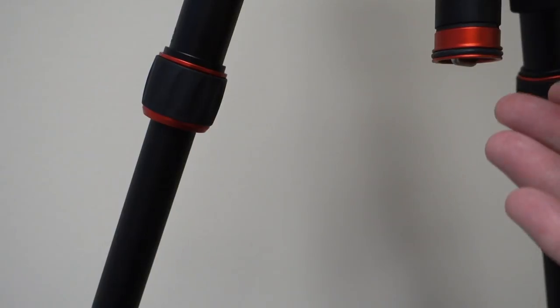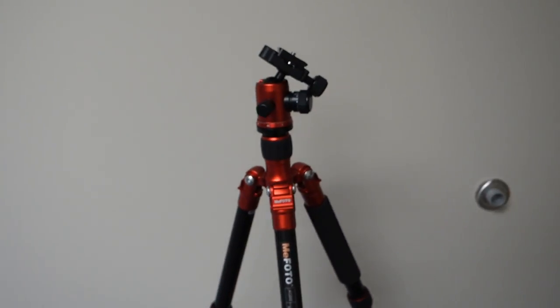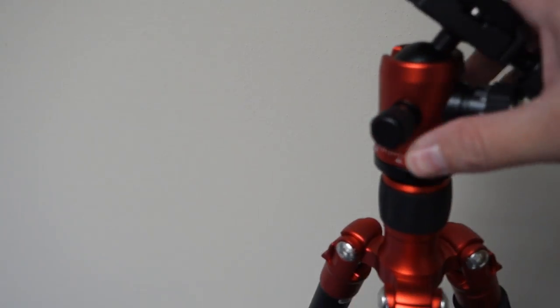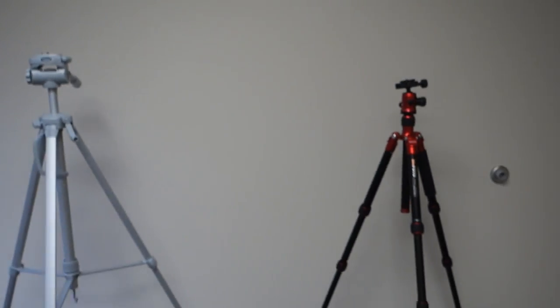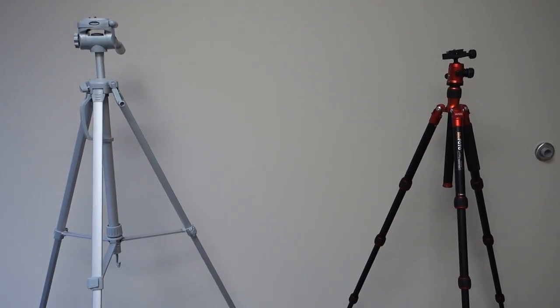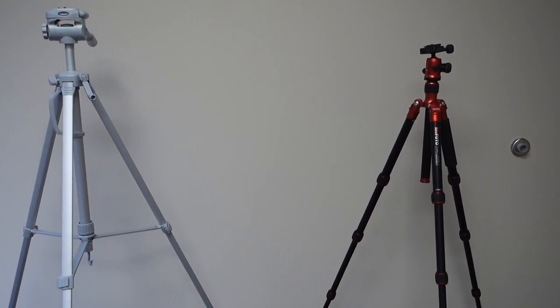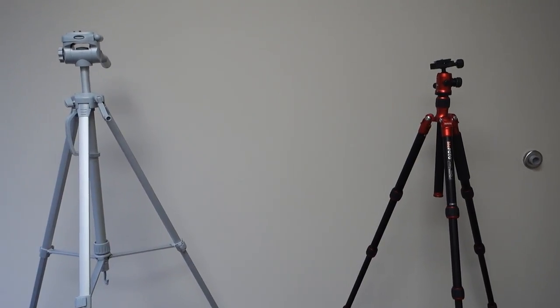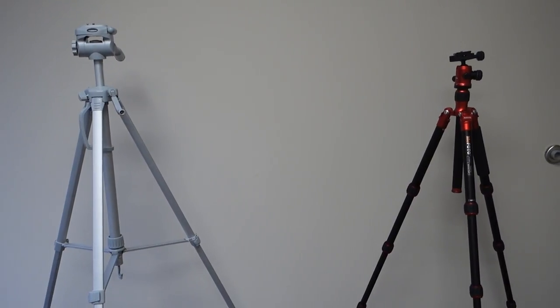The next thing you'll notice is the fact that the MeFoto just looks and feels better. Yes, it is a little bit shorter when you have them side by side. Right there you can see the Targus is a little bit higher because it sits a couple inches higher than the MeFoto does. And that's okay, I don't need it to be seven feet tall or things of that nature, so I'm good with that.